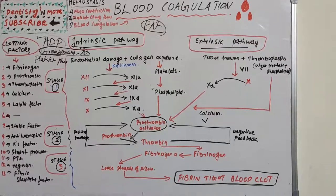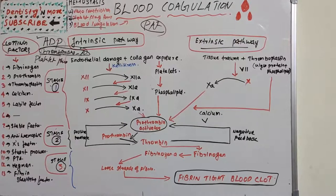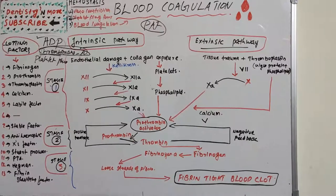By definition, blood coagulation or blood clotting is defined as a process in which blood loses its fluid nature and becomes a jelly-like mass a few minutes after it is shed. Before learning the two pathways — intrinsic and extrinsic — we need to learn the clotting factors. Coagulation of blood occurs through a series of reactions due to the activation of a group of substances necessary for clotting, known as clotting factors.